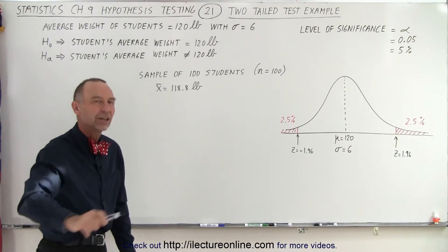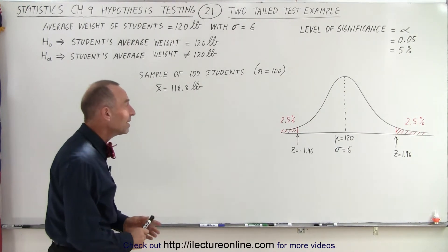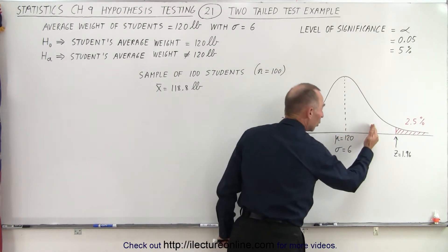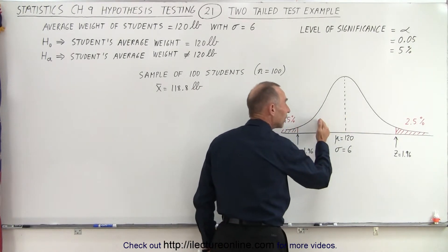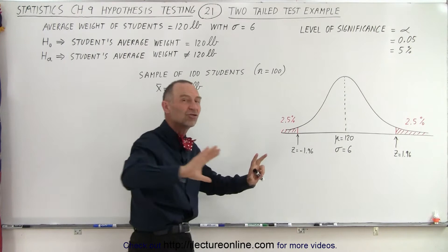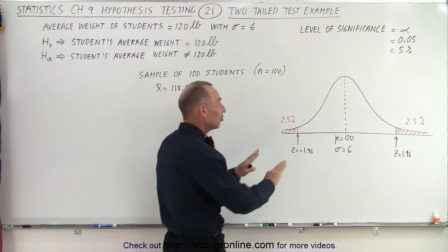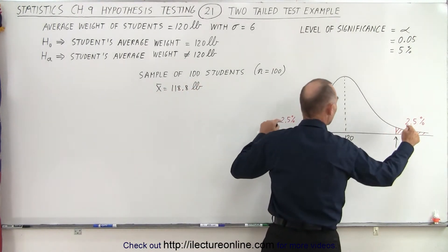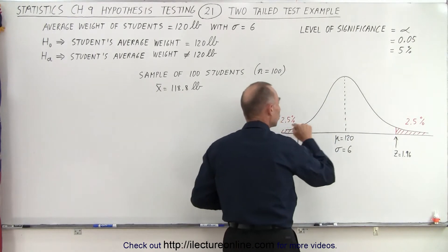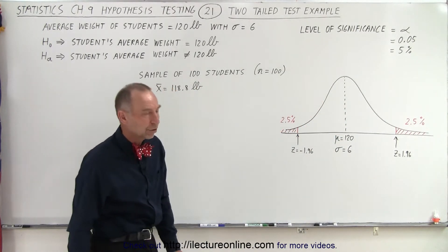So that means that the average weight could be greater or it could be smaller, and in both cases we would reject that null hypothesis. We just need to be far enough away into the critical region at both sides of the distribution of the population.